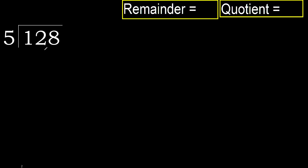128 divided by 5. 1 is less, therefore next. 12 is not less, therefore with 12. 5 multiplied by which number is nearest to 12?